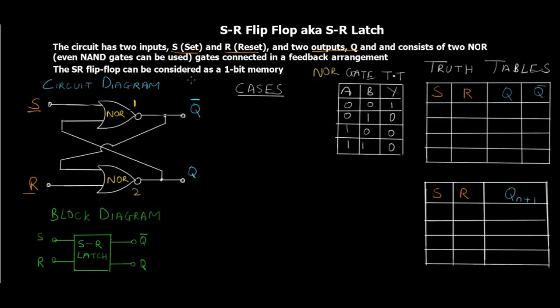The SR flip-flop is used to store a one-bit memory. It exists in two stable states, making it a bi-stable device — those two states being high and low. In the SR flip-flop these stable states are called Set and Reset, which is why it's named SR. It is also known as an SR latch because it acts as a latch, meaning it stores and holds on to data in memory.